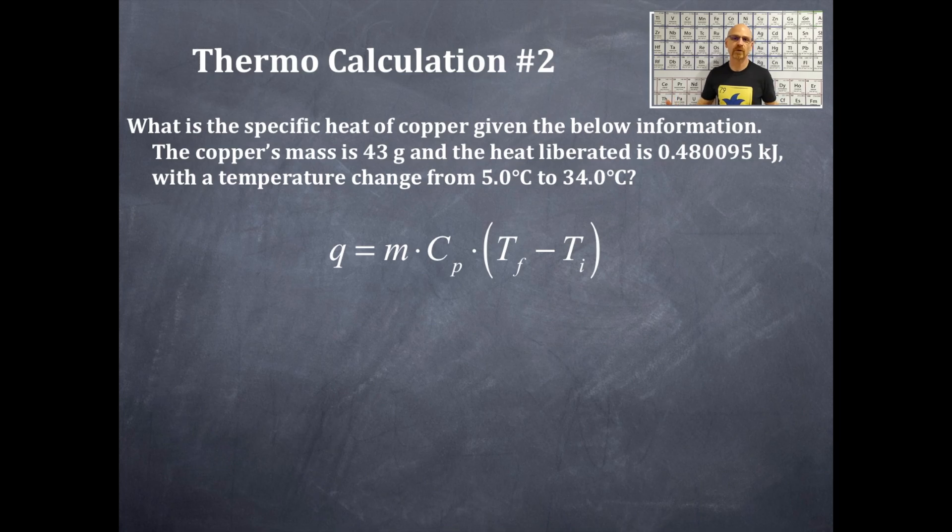Let's figure out what are we solving for on this problem. First of all, we are solving for the cp. That is the specific heat capacity for the copper. That's what we're going to solve for. Then from this information here, where does this information go into this equation?